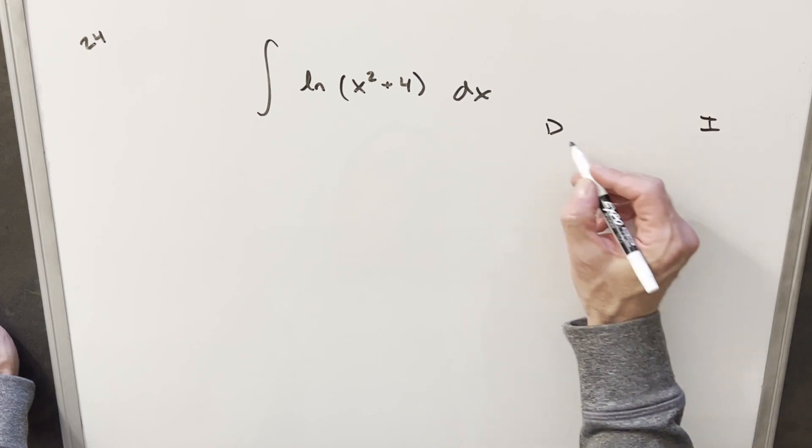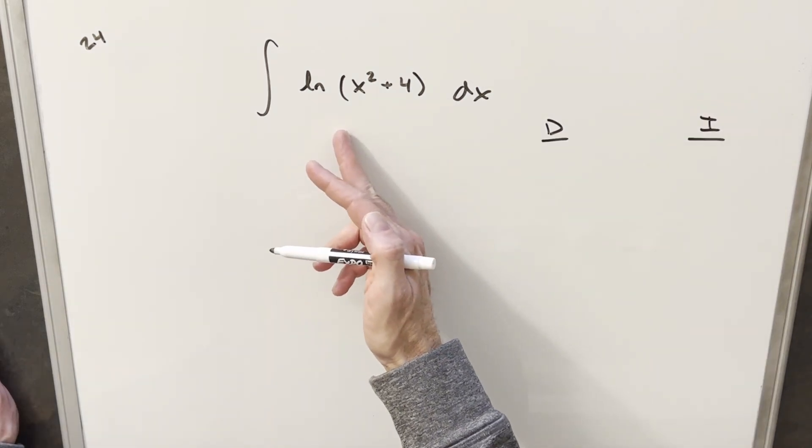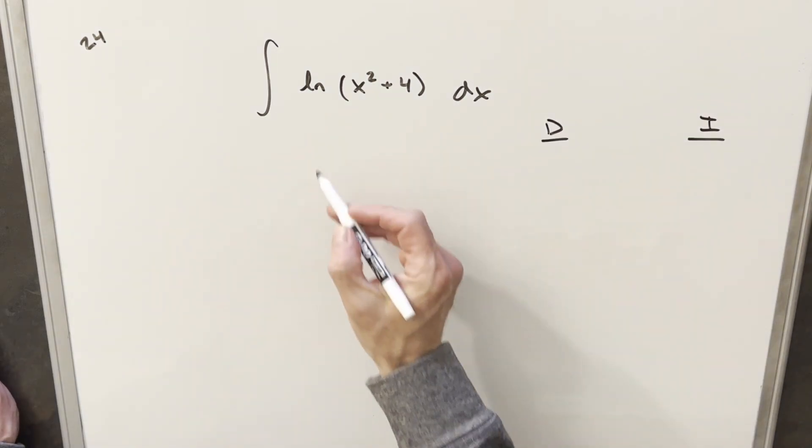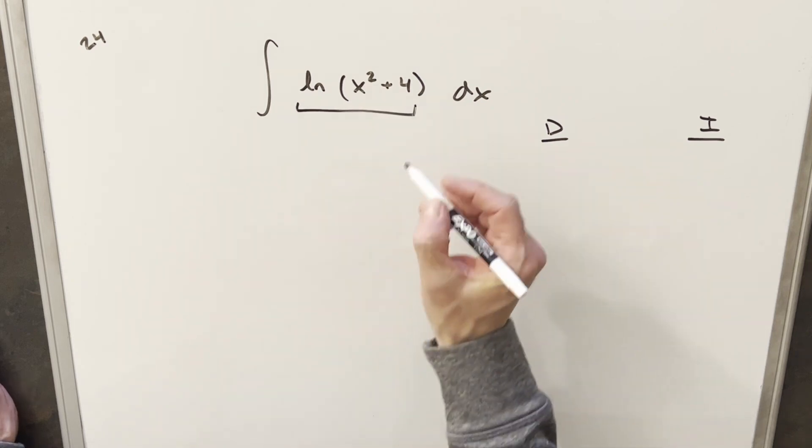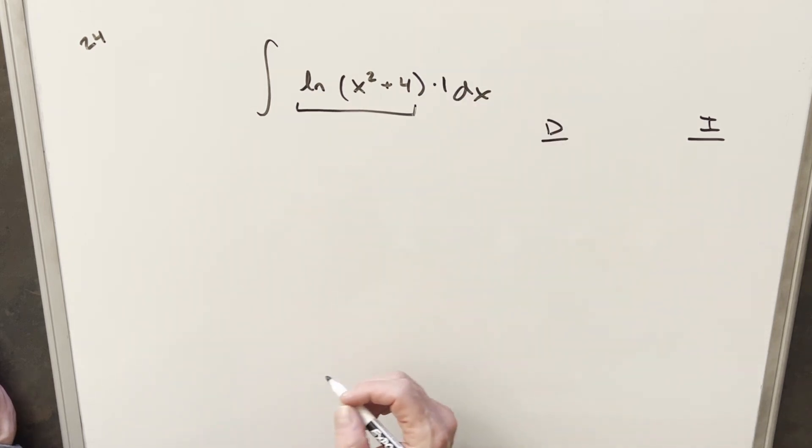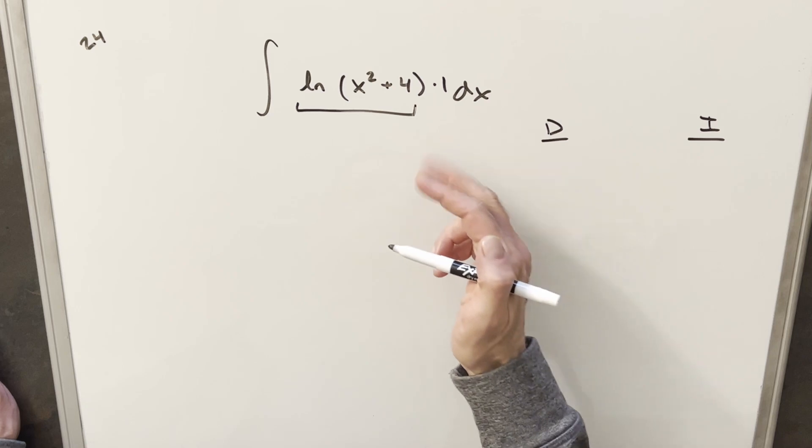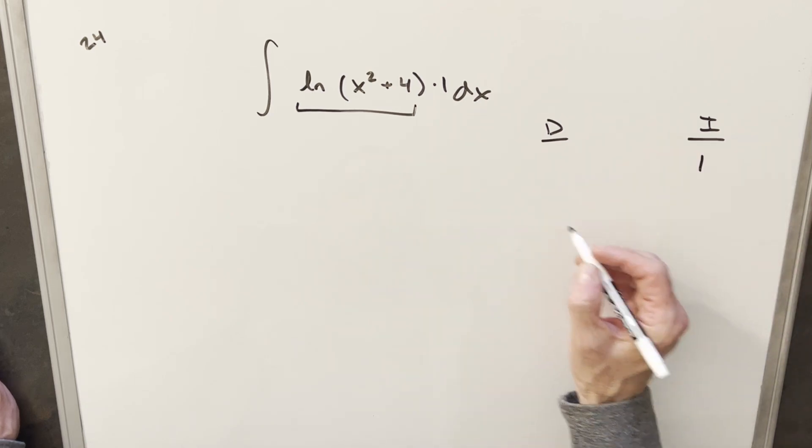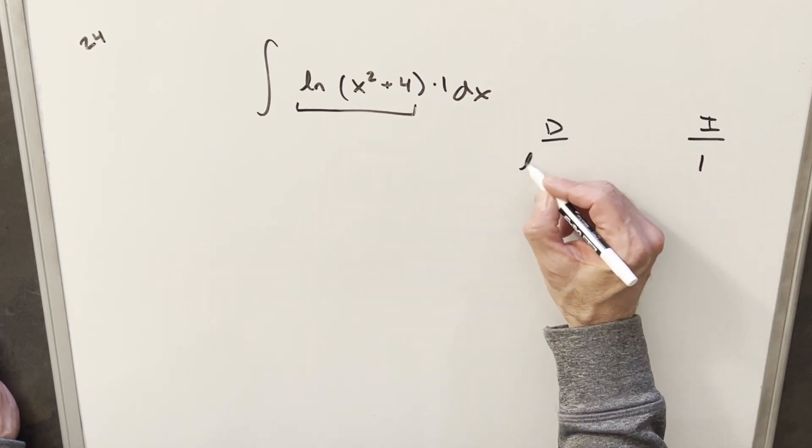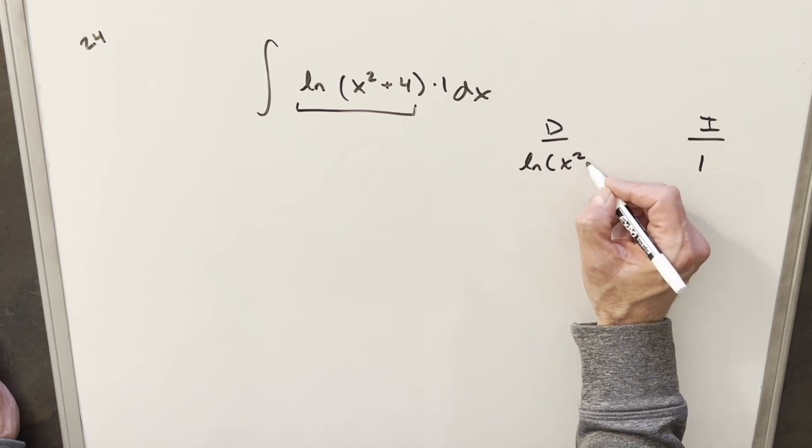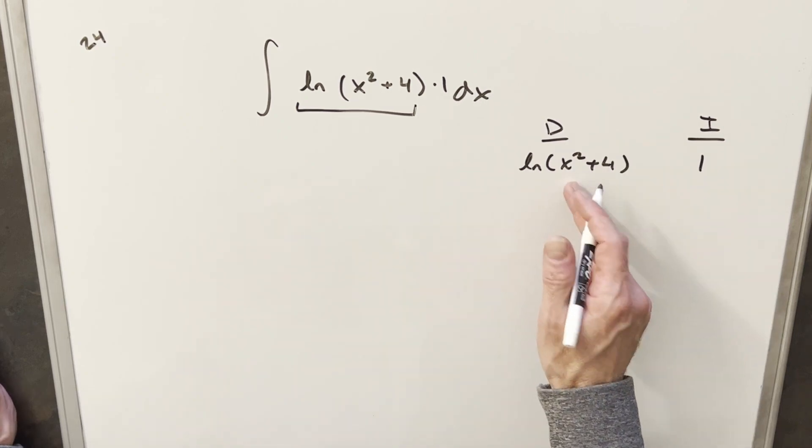We're going to use the di method. With this, we're going to choose one part to integrate and one part to differentiate. Now, we only really have one part, this natural log. Just multiply it by one in order to create a second part. So I'll integrate the one and differentiate natural log just because that's hard to integrate, but it's pretty easy to differentiate.